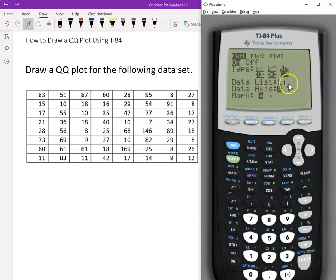Data list, which is where is our data? Our data is L1, that's good. Otherwise you choose other columns. Data axis, usually we choose Y, but if you like X you also can. Let's choose Y as the data axis. And mark, it depends which one you like.